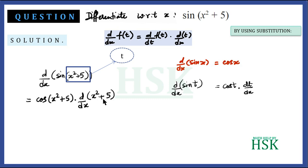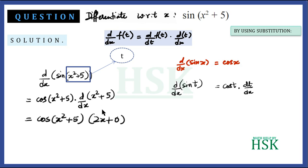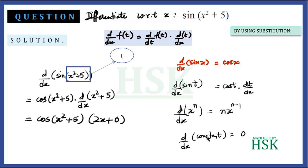We can easily differentiate x² + 5: its differentiation equals 2x plus 0. This is because d/dx of xⁿ equals n·x^(n−1), and d/dx of a constant equals 0.